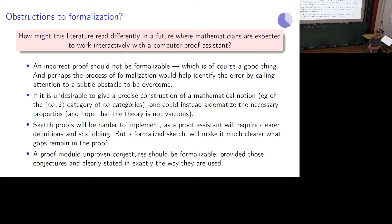An audience member asks whether Voevodsky actually fixed the Kapranov-Voevodsky proof, and a separate question: did he fix it in a proof assistant? The speaker notes that the error is not precisely understood, and refers listeners to Simone Henry for more details.